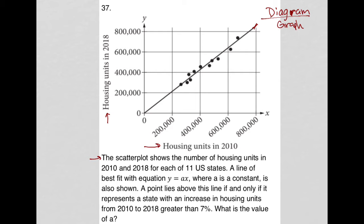A line of best fit has the equation y equals ax. What does that tell me? First of all, that tells me that the y-intercept is zero, because otherwise we'd have a plus b, but our b is zero so no need for a number there. Our a value is the slope — it's like y equals mx plus b format. So our a value is the slope. We don't know what the slope is yet.